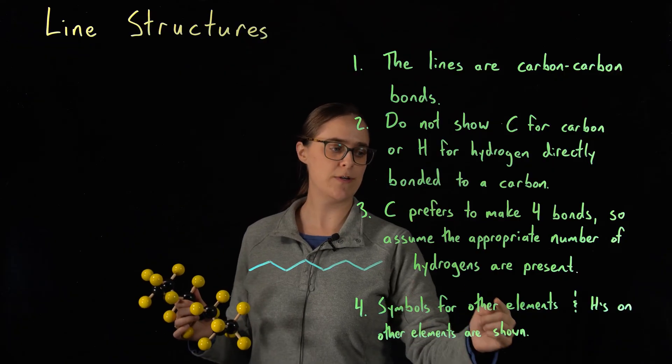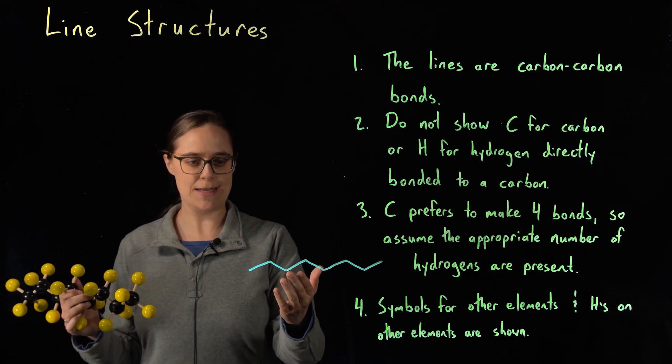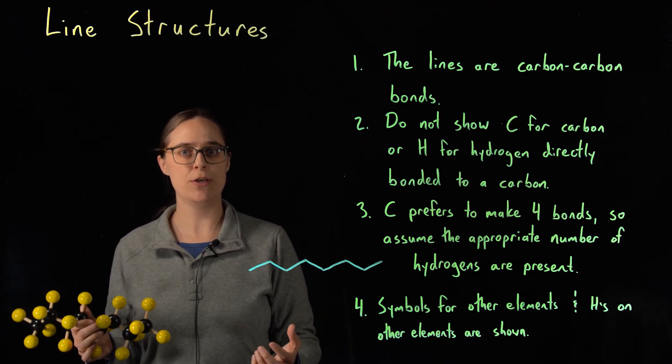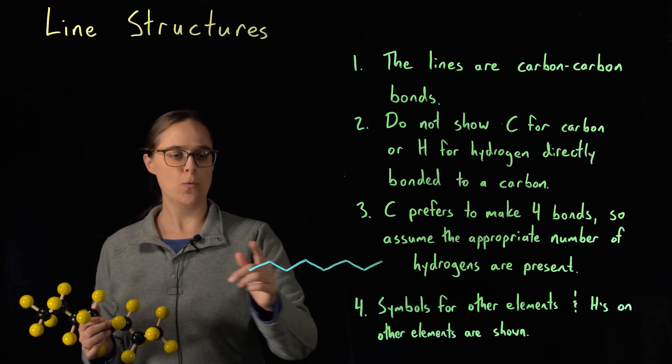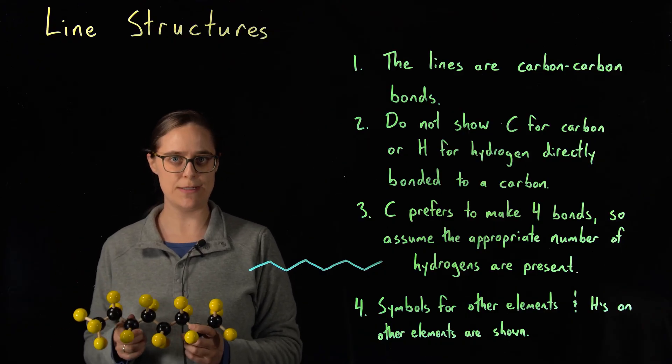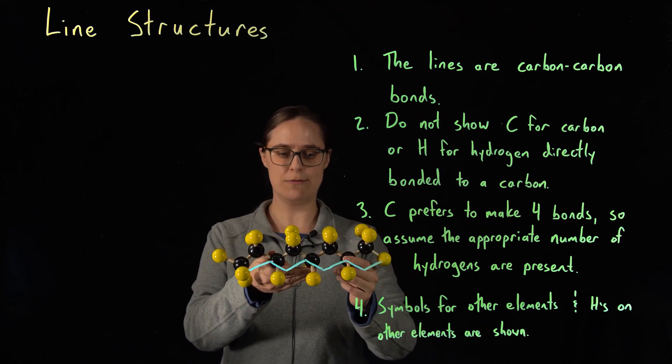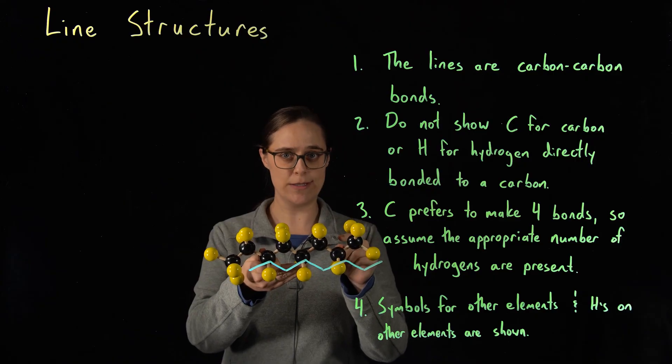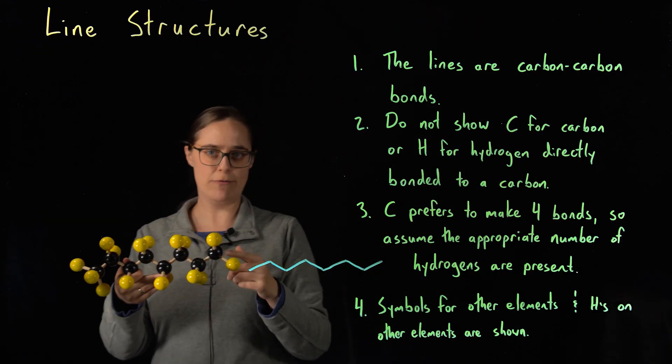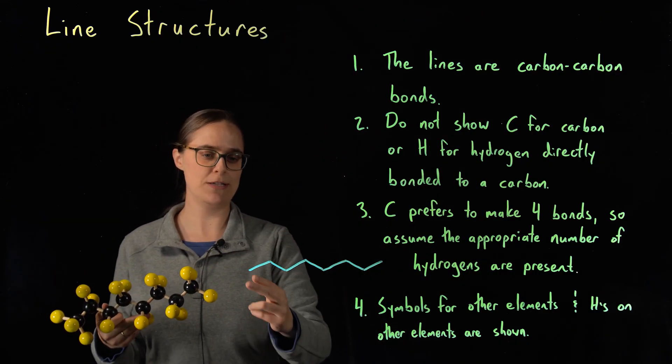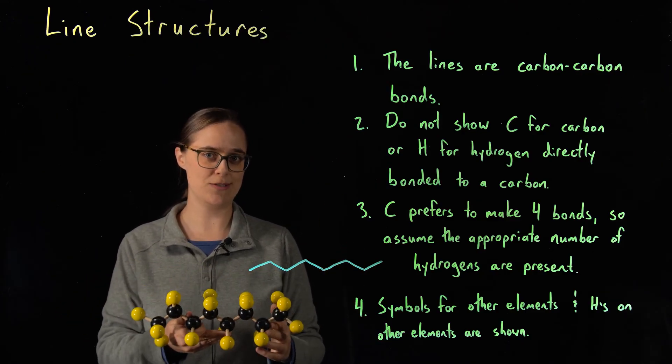And rule four, symbols for other elements and hydrogens on other elements are shown. So if this was an alcohol and there was an OH group on it somewhere, you would still need the O for oxygen and the H, the hydrogen on the oxygen. One more detail is that this zigzag shape is supposed to closely resemble the zigzag shape of the actual molecule.